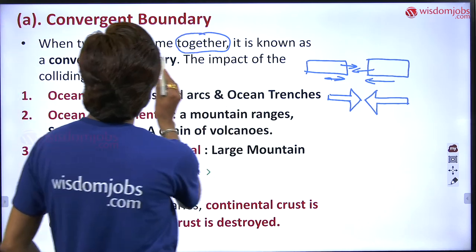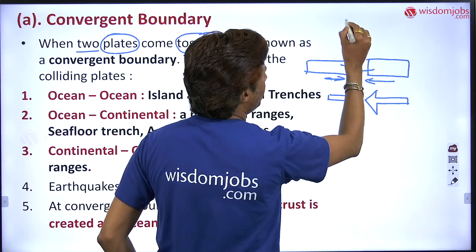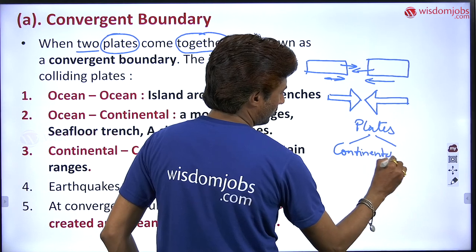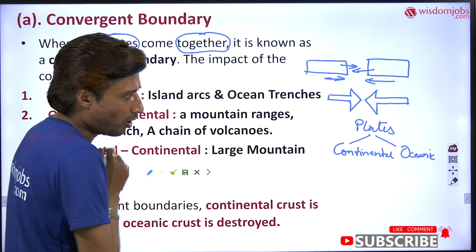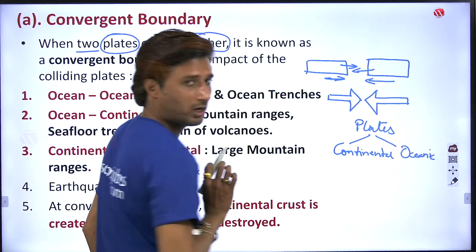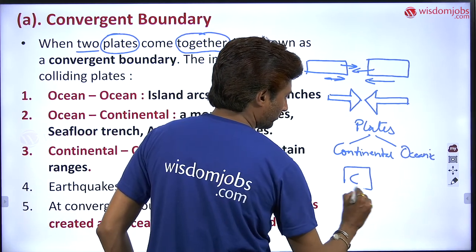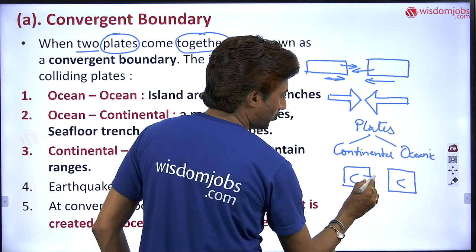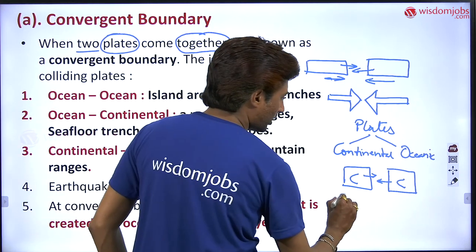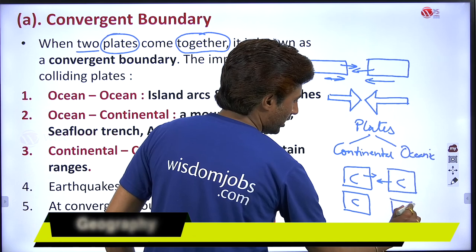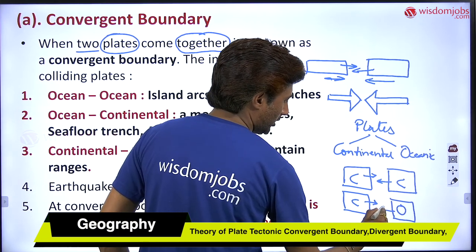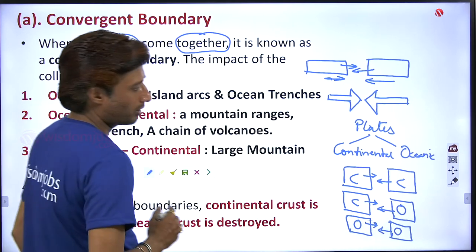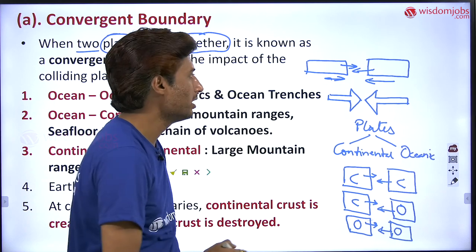You have to consider that plates are of only two types: one is continental and another one is oceanic. If we take the combinations of these two plates, there are three: number one, continental and continental; number two, continental and oceanic; number three, oceanic and oceanic. These are the combinations in a convergent manner.